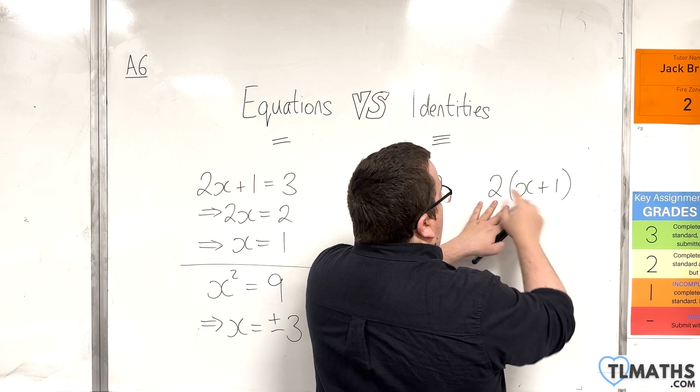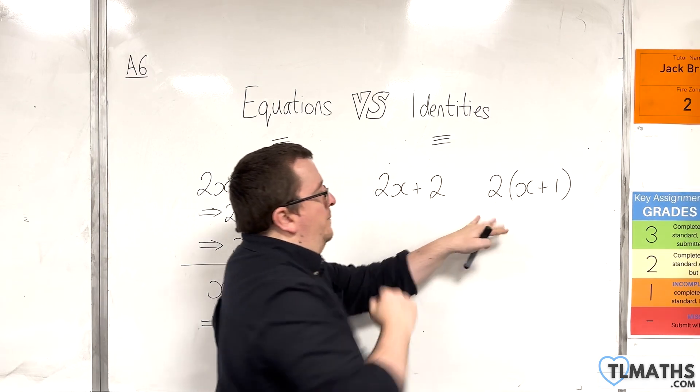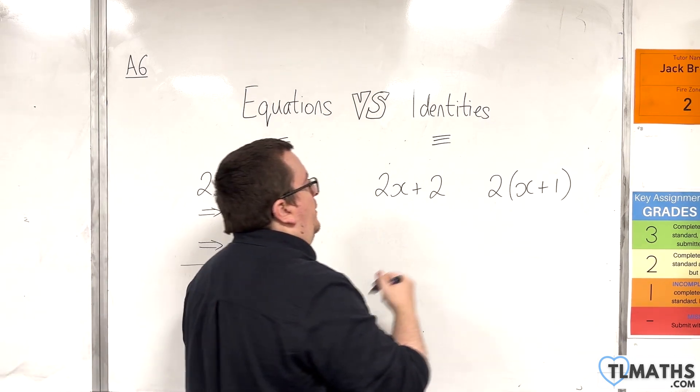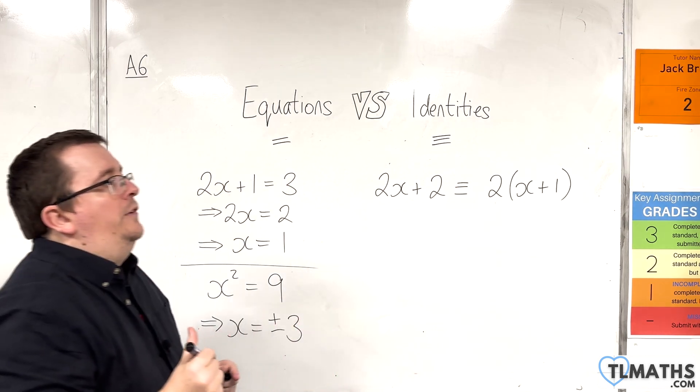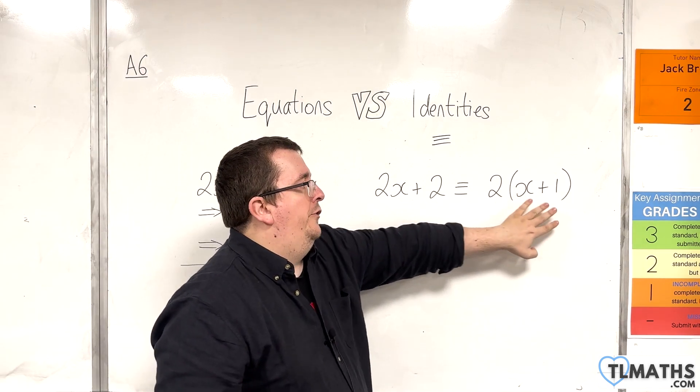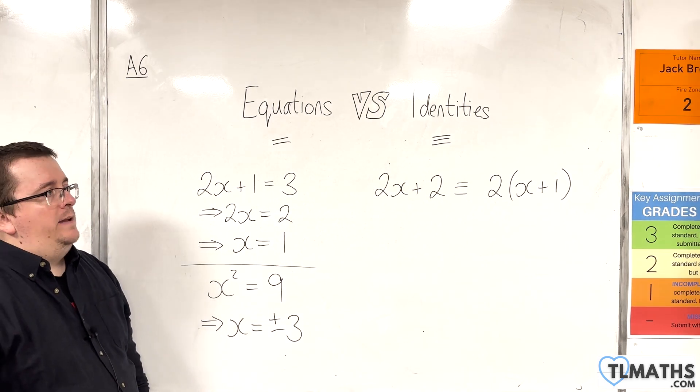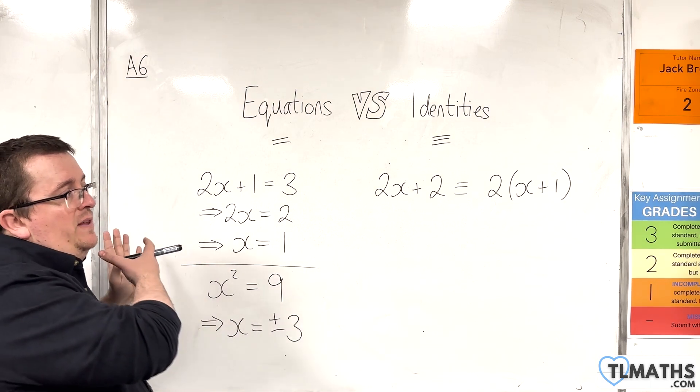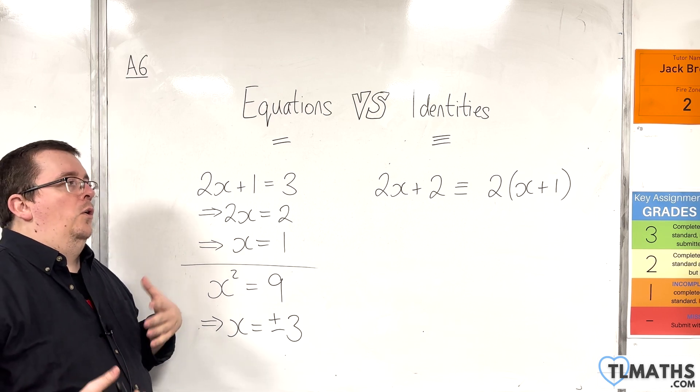And likewise, if you started over here, and I said, right, expand the brackets out. 2 lots of x is 2x. 2 lots of 1 is 2. So the left-hand side is the same as the right-hand side. The two expressions are equivalent. And so I can say that 2x + 2 is equivalent to 2 lots of (x + 1). And this is an identity. So what you're trying to do is you're saying that the left-hand side will give me the same result as the right-hand side for all values of x.